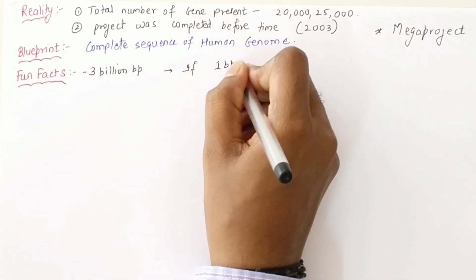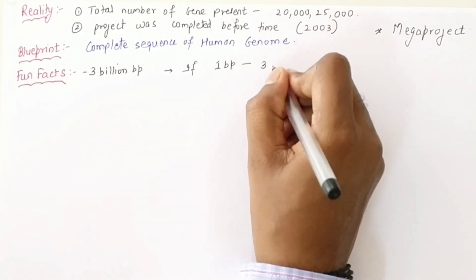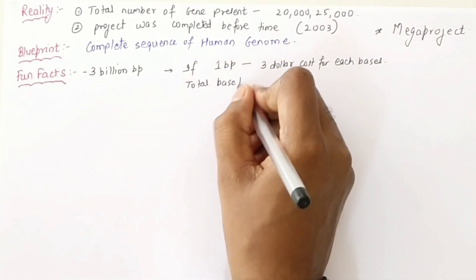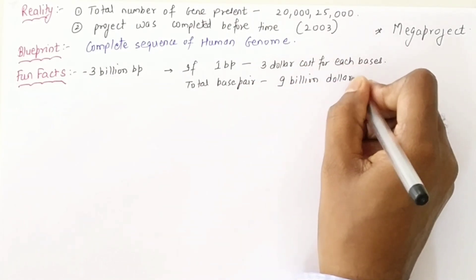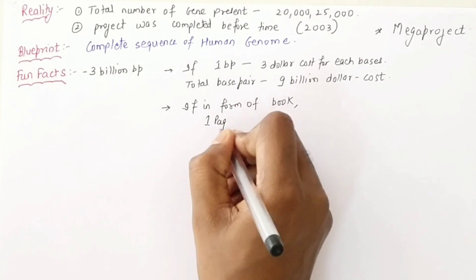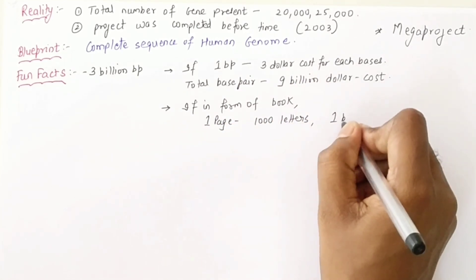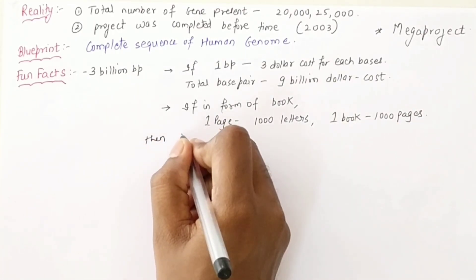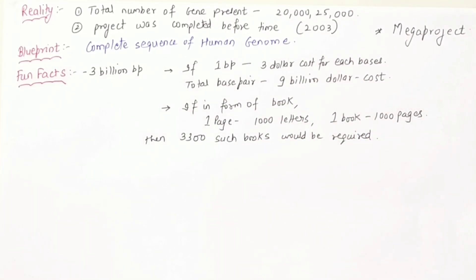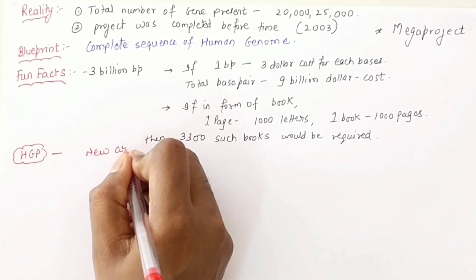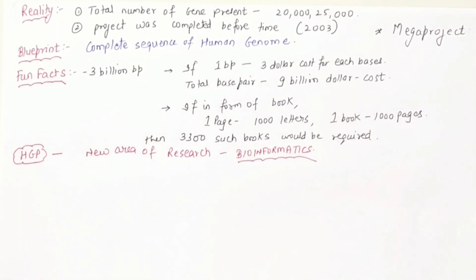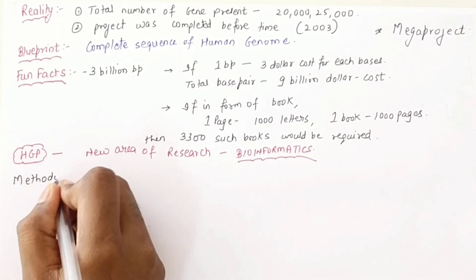There are 3 billion base pairs. If one base pair costs 3 dollars, then 3 billion base pairs would cost 9 billion dollars. If you convert all the information to pages — with 1000 letters per page and 1000 pages per book — you could make 3,300 books of this genome data. This led to a new research area: bioinformatics, where statistics and data can be maintained and analyzed.